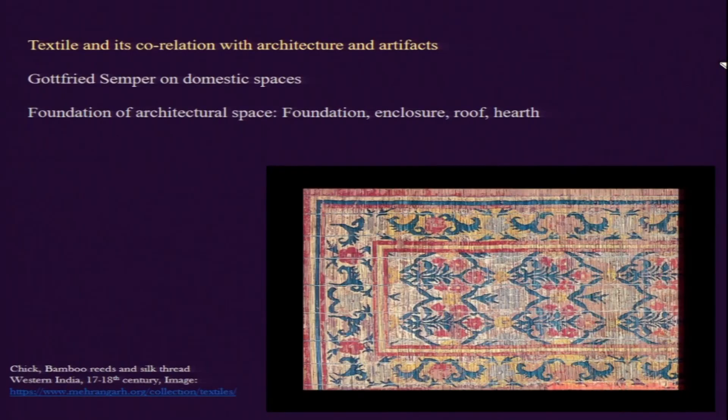Semper argued that many primary ancient structures — for example in India and Egypt — are associated with religion, whereas he was highly interested in domestic spaces. He focused on Assyrian and Mesopotamian structures such as palace complexes found in ruins, and he thought that the architectural structures and the decorations appearing on them — in the form of panels or bas-relief — should not be thought about separately.